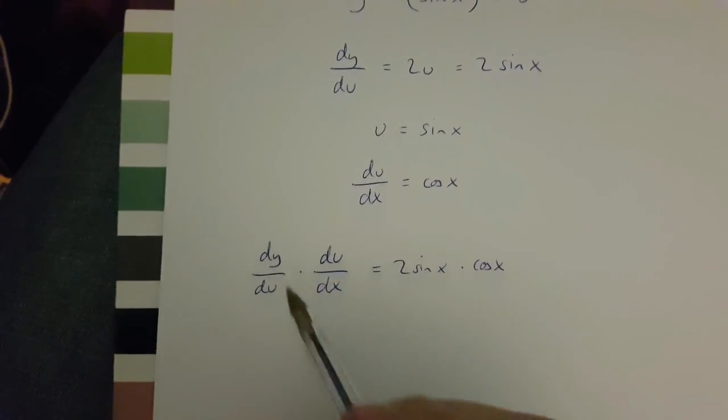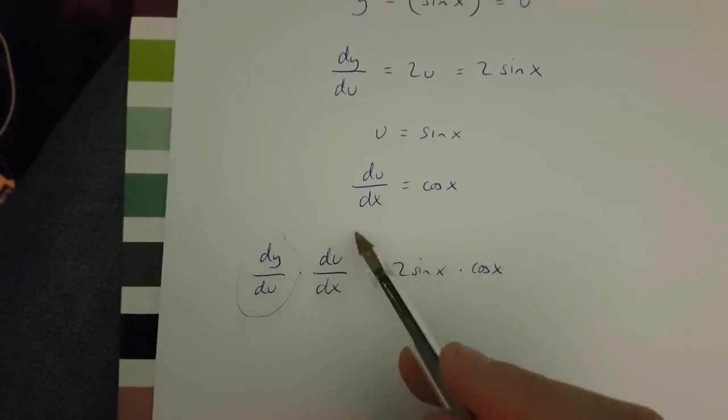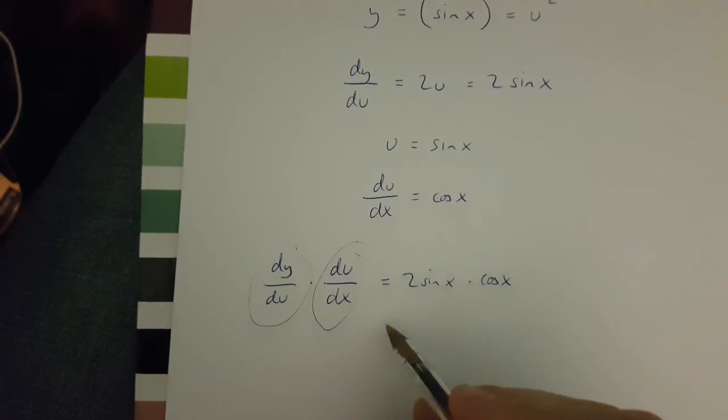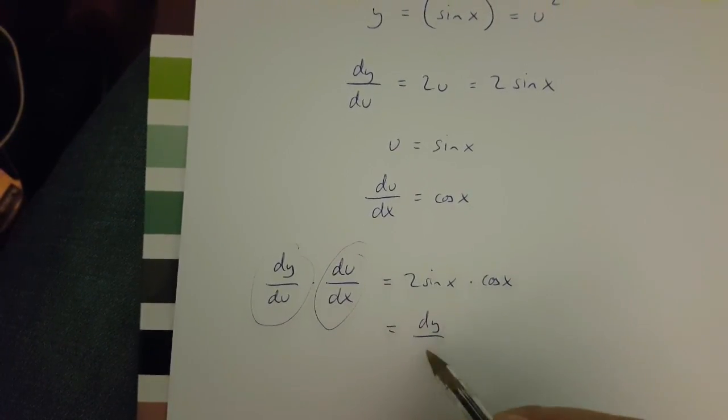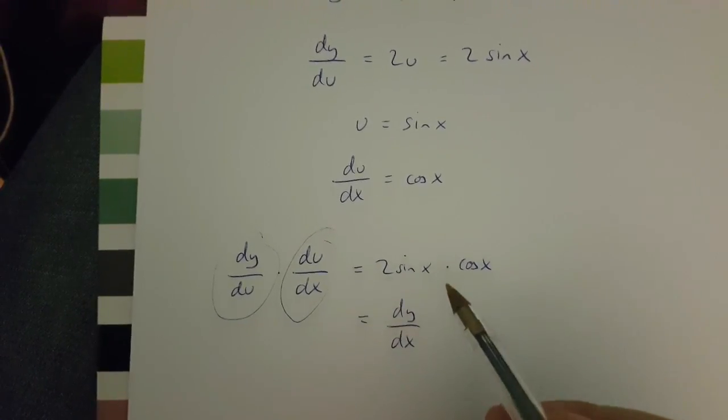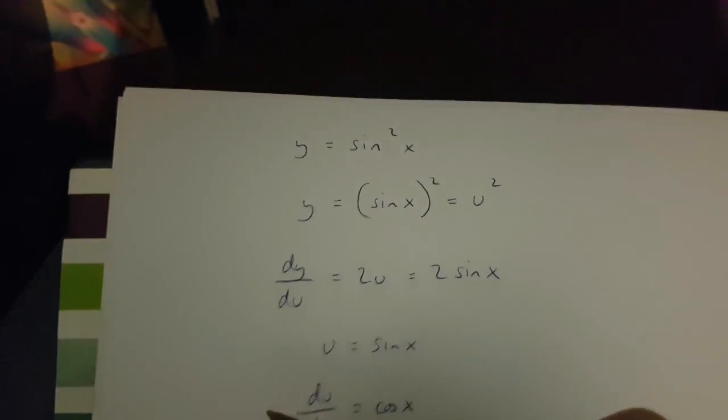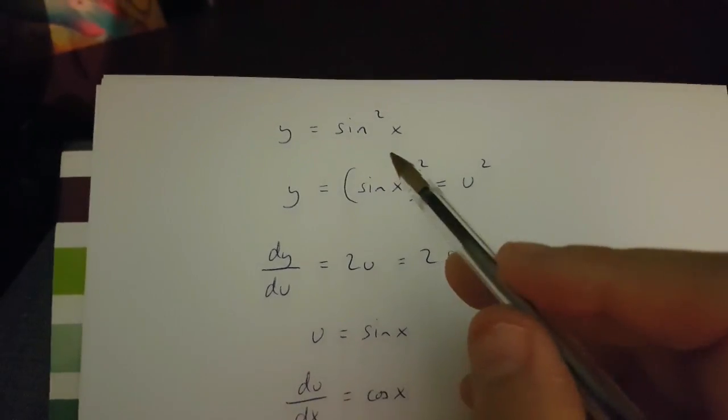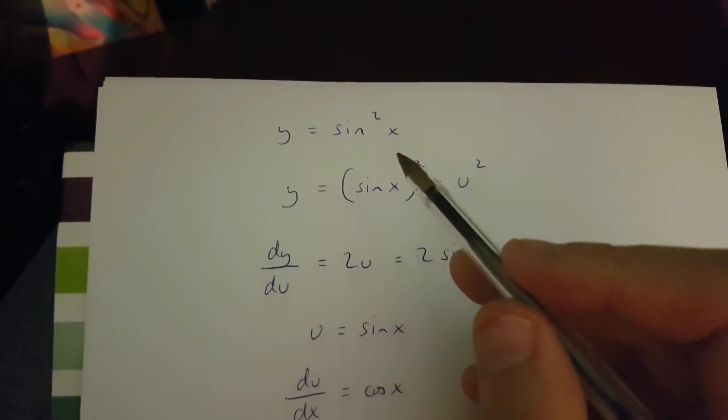OK, and because this is multiplying this, what we get is dy over dx, which is 2 sin x times cos x, which is y equals sin x squared differentiated.